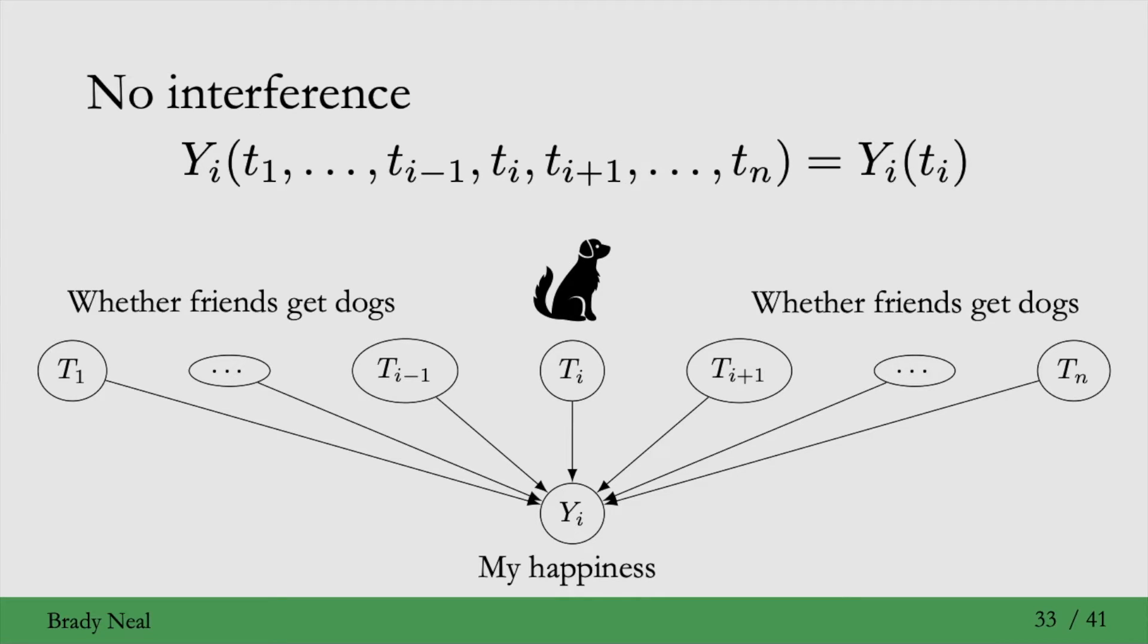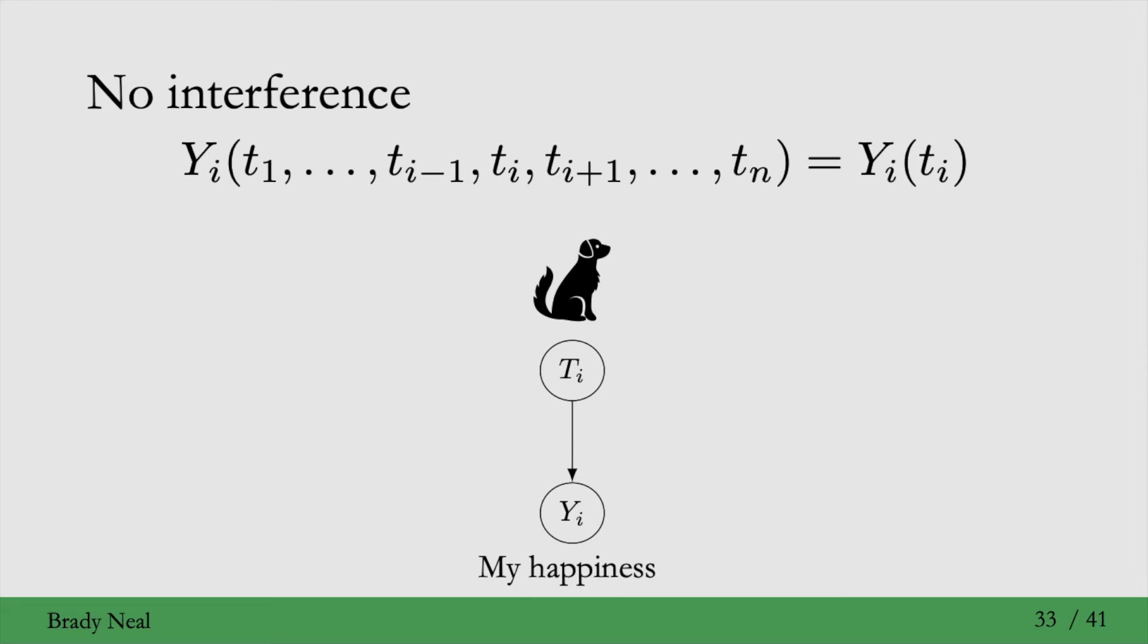You could imagine that my friends getting dogs could affect my happiness as well, because maybe our dogs are more likely to go on a play date, it can increase my social interaction with my friends. And what the no interference assumption is saying is that my happiness is not a function of my friends getting dogs. It's only a function of me getting a dog.